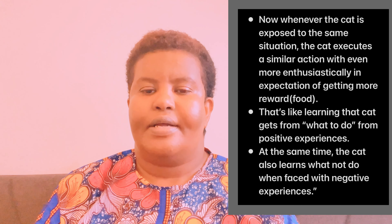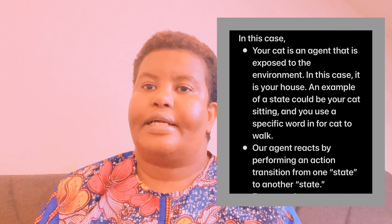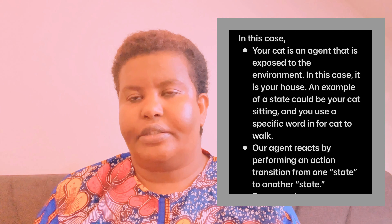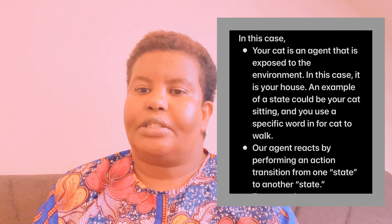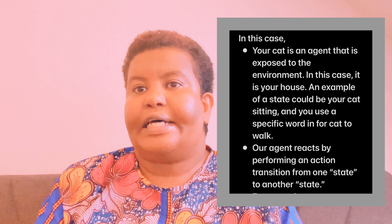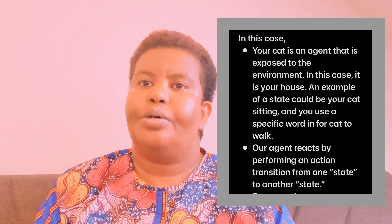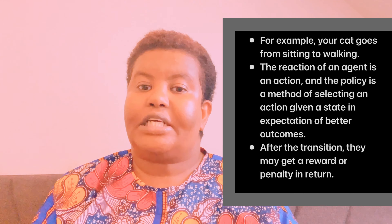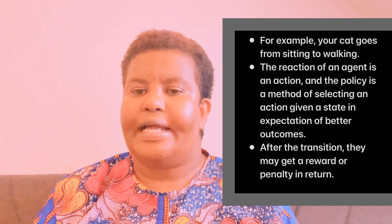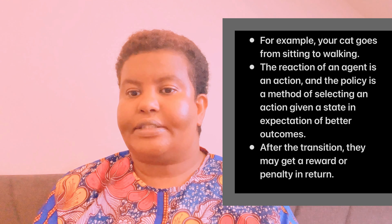At the same time, the cat also learns what not to do when faced with negative experiences. In this case, your cat is an agent that's exposed to the environment — in this case, your house. An example of a state could be your cat sitting, and you use a specific word for the cat to walk. Our agent reacts by performing an action, transitioning from one state to another state. For example, your cat goes from sitting to walking. The reaction of an agent is an action, and the policy is a method of selecting an action given a state in expectation of better outcomes. After the transition, they may get a reward or penalty in return.